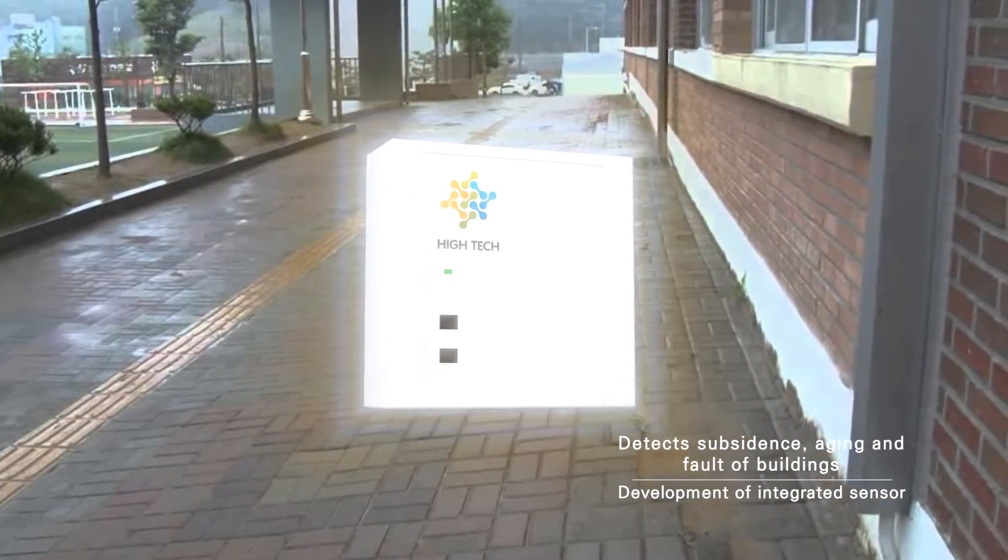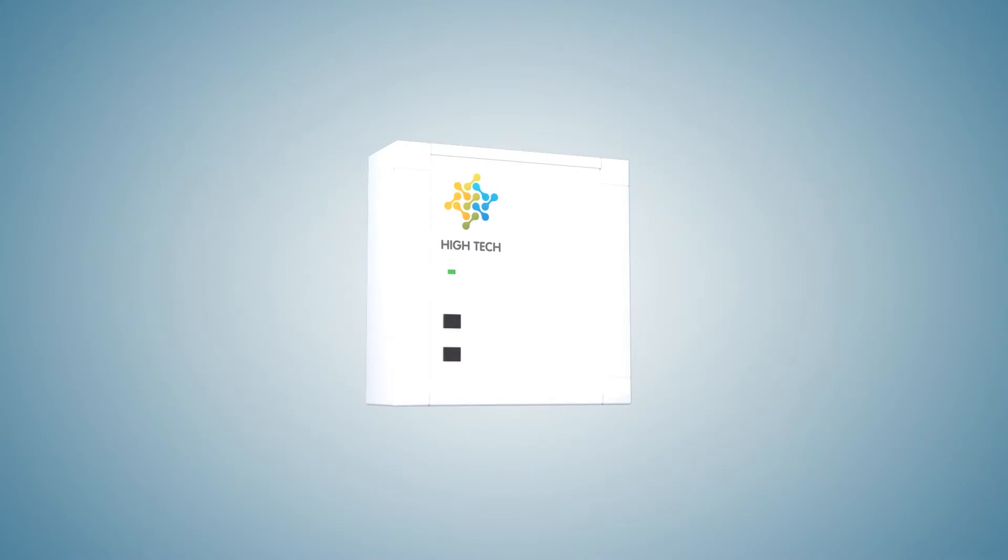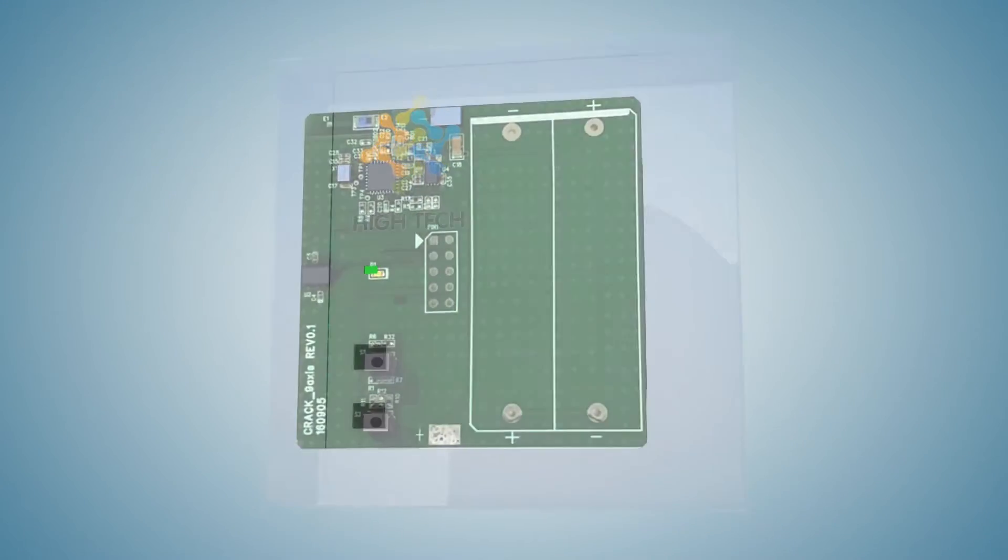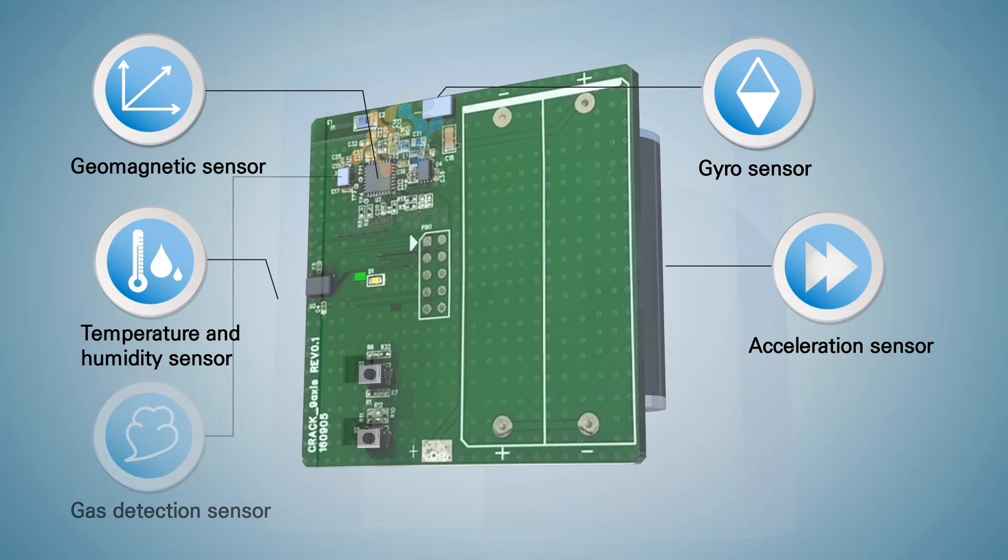This integrated sensor comes with various built-in sensors to measure abnormalities of structures like temperature and humidity sensor, gyroscope sensor, accelerating sensor for building safety management, and environment management at the same time.